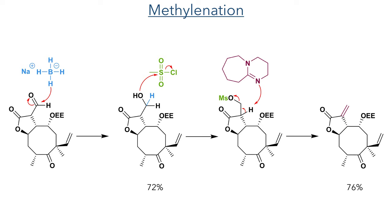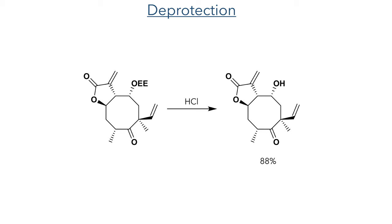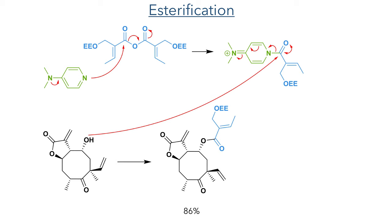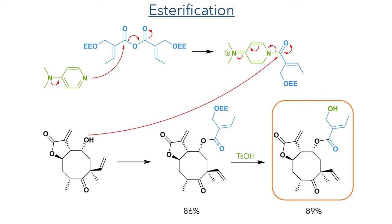The ethoxyethyl group could then be deprotected using hydrochloric acid, and the molecule was taken forward to install the final ether pendant group. This was installed by reacting DMAP with the anhydride of the desired pendant group, forming an activated ester which was attacked by the hydroxyl group to form the desired ester in an 86% yield. Further deprotection of the ethoxyethyl group present in this ester produced the target molecule in an 89% yield, completing the synthesis of Jujuyein.